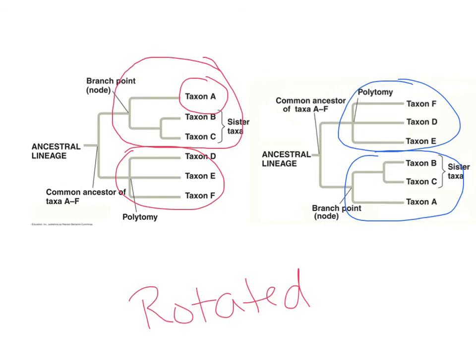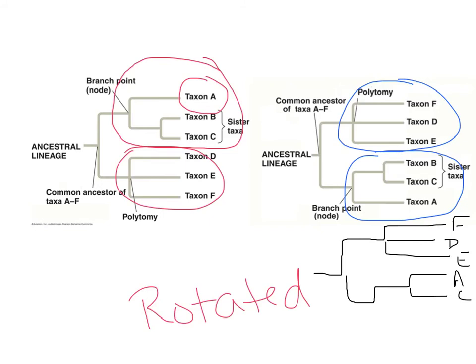What you need to be able to do is compare diagrams and determine whether they're telling you the exact same thing. For example, if the arrangement changes so that A and C share a more recent common ancestor than B and C, that would be a different diagram — it would not show the same thing as the other two. So you'll need to be able to tell the difference between them.